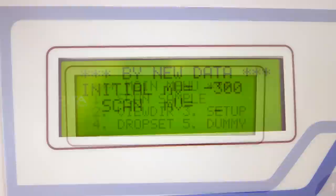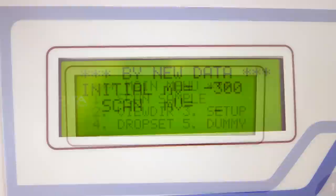First enter the initial microvolt and scan microvolt and select the scan rate. Then choose the mode selection that you want, that is DC or sample DC.